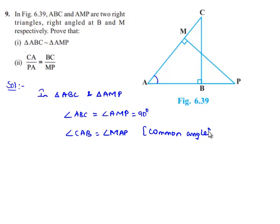Therefore, here as in both the triangles, two corresponding angles are equal, we can say by angle-angle similarity, triangle ABC is similar to triangle AMP.